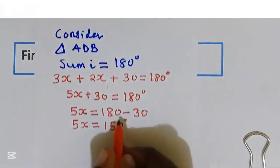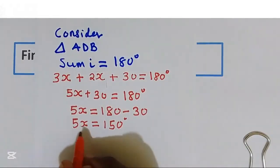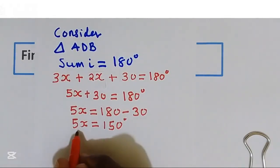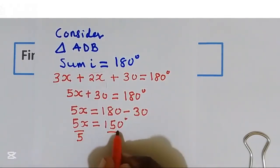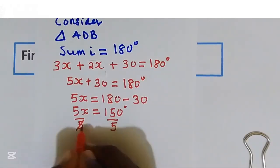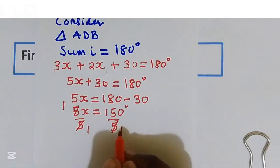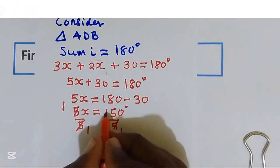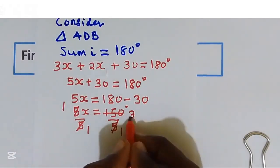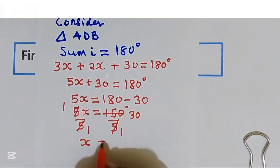I'm going to divide by 5 both sides. By 5 to 150. So the value of x is equal to 30 degrees.